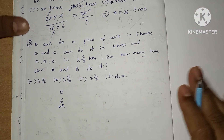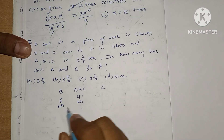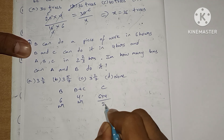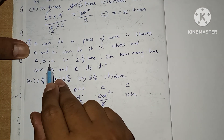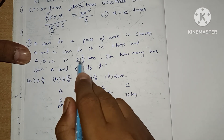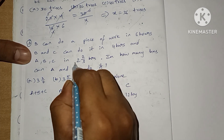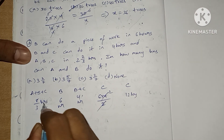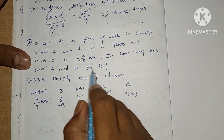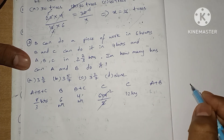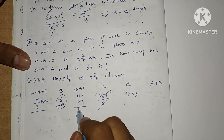Question 3: B can do a piece of work in 6 hours, and B and C together in 4 hours. From this, C alone = (6×4)/(6−4) = 24/2 = 12 hours. A, B, and C together can complete the whole work in 8/3 hours. The question asks how long A and B together will take. We have A+B+C = 8/3 and B+C = 4; from these we can find A alone.